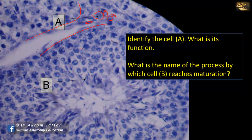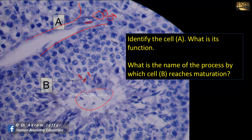What is the name of the process by which cells B reach maturation? These cells with elongated flattened nuclei are spermatids. They will be released into the lumen of the seminiferous tubule and later, as they reach the epididymis, they will become mature by a process called spermiogenesis. They are produced within the wall of the seminiferous tubule by spermatogenesis but reach maturity by spermiogenesis. The whole process takes about 70 days, at the end of which spermatozoa are formed.